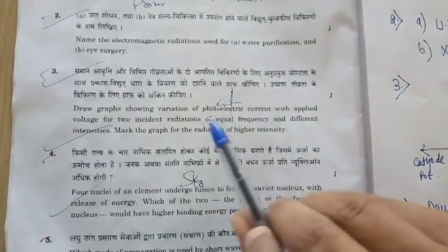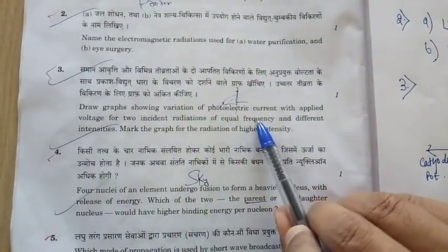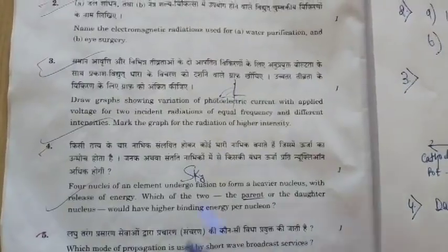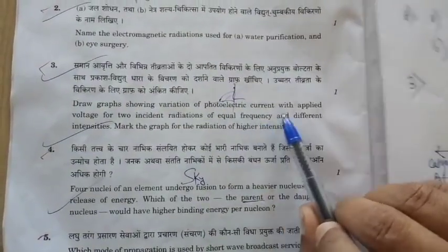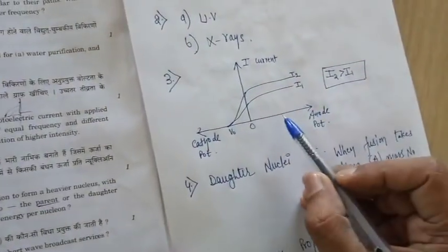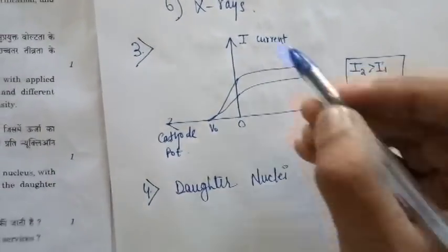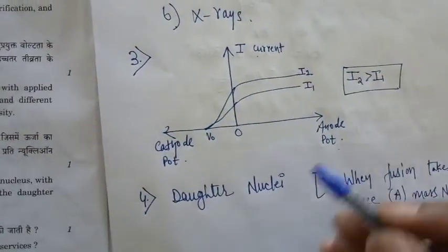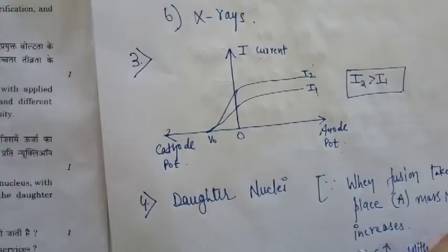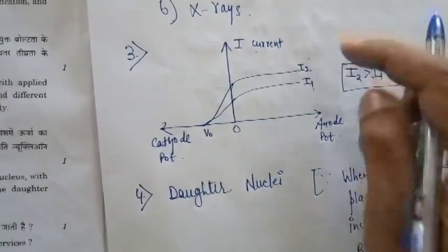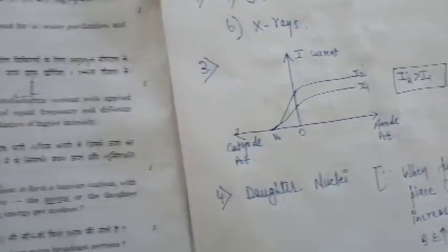Question 3: plot a graph showing the variation of photoelectric current with voltage for equal frequency but different intensities. The graph is between anode potential and current, showing two different intensities I1 and I2, where I2 is greater than I1.